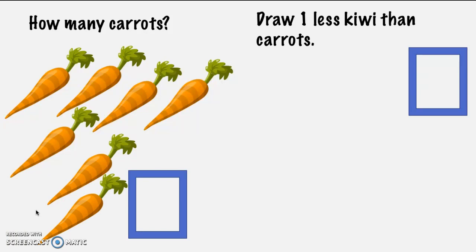Look at all those delicious carrots. It says: how many carrots? On the other side it says: draw one less kiwi than carrots. The first thing we need to do is figure out how many carrots we have — otherwise we won't know how many kiwis to draw. Can you go ahead and count the carrots and let me know how many you see? This is tricky to count because they're all over the place and they're little. Go ahead and tap on each one if you need to and go very slowly. Let me count: one, two, three, four, five, six, seven. Perfect — did you get seven? Now it says draw one less kiwi than carrots. If you don't know what a kiwi looks like, you can draw circles instead. Go ahead and press pause, draw one less kiwi than carrots, and then press play to check yourself.